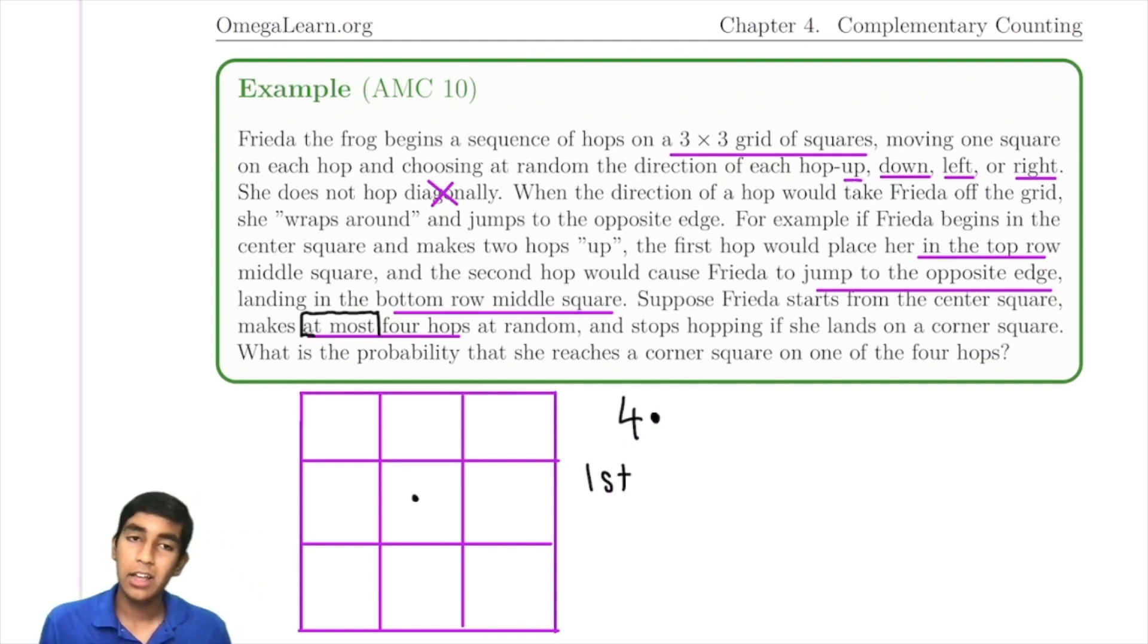Now, the key thing to know here is our board is symmetric. The edges, for example, being right edge versus left edge or top edge, it doesn't really matter. Because the problem just asks us to not reach a corner square. And all edges are adjacent to the center and all edges are adjacent to two corners. So they're all symmetric. So we can just count the number of squares that, let's say, Frida moves up, and multiply by four.